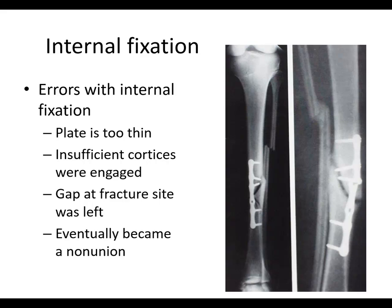Here you can see some errors. The plate is too thin, there are insufficient cortices engaged with this thin plate, and the fracture wasn't properly reduced, leaving a gap — eventually this became a nonunion. Here the plate is broken — see that? There's a broken plate, and eventually it becomes a nonunion. The fibula healed nicely — left that one alone and it healed. But the tibia was operated on and it didn't heal, so obviously something wasn't done well.